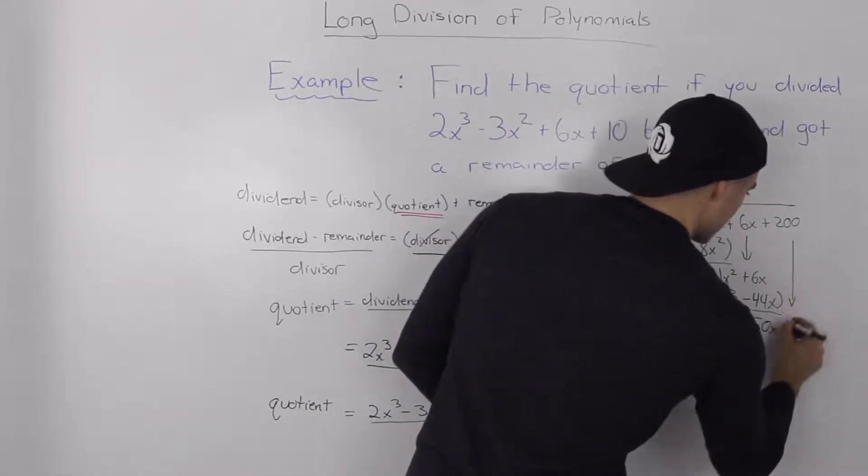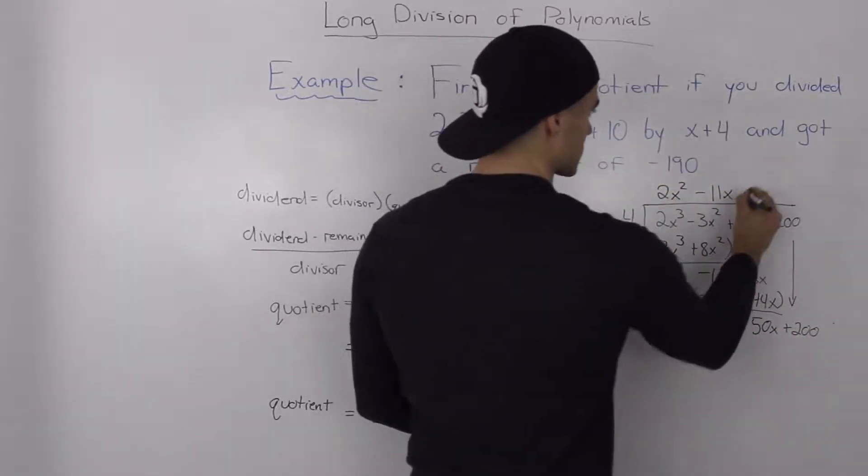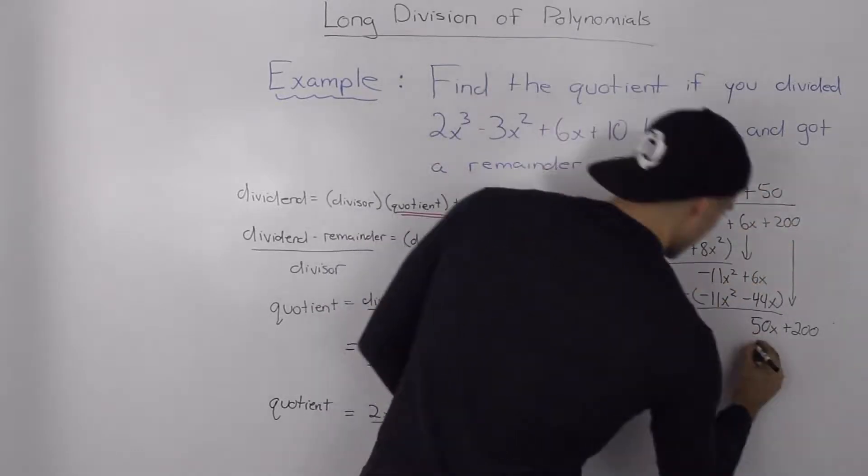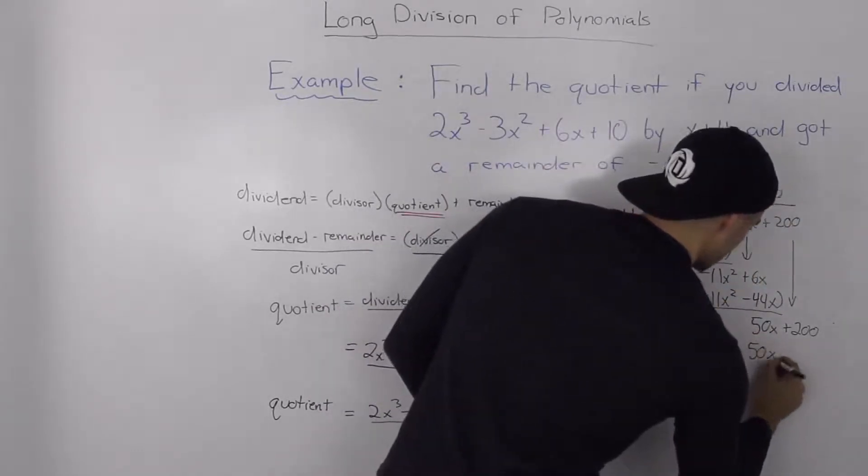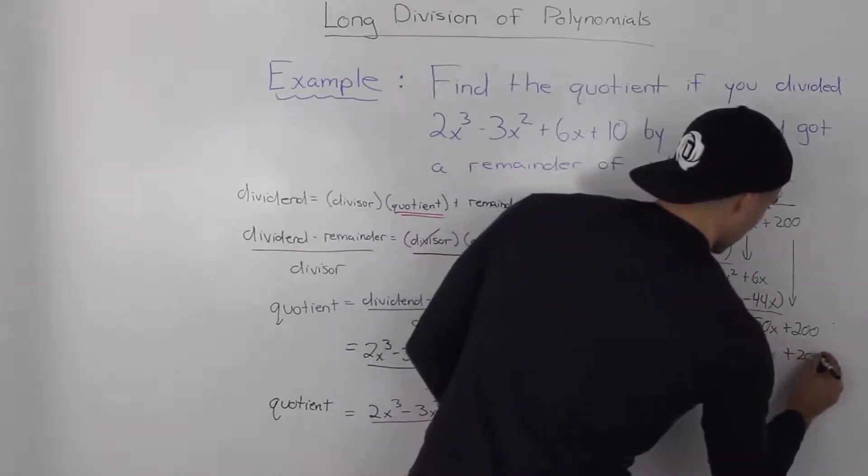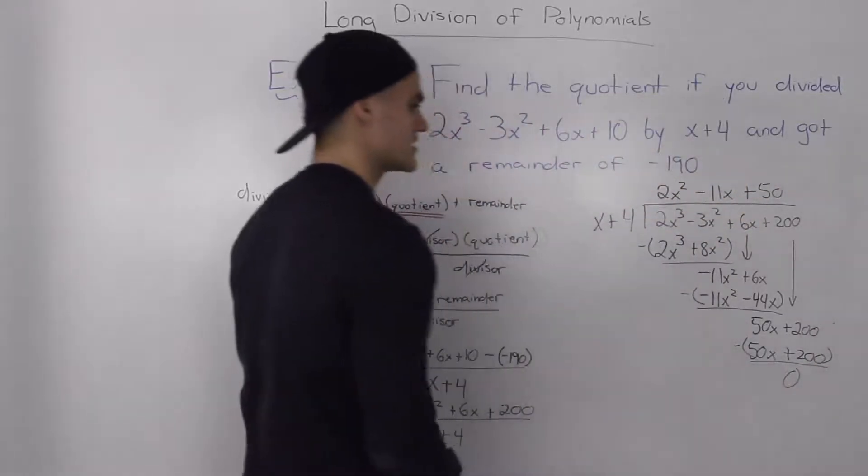Bring down the 200. How many times does x go into 50x? Well it goes in 50 times. 50 times x is 50x and then 50 times 4 is 200. And when we minus both of these expressions we get a remainder of 0.